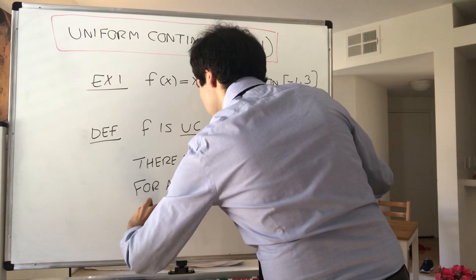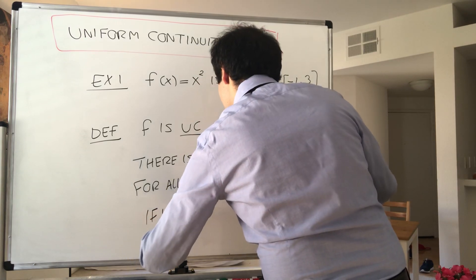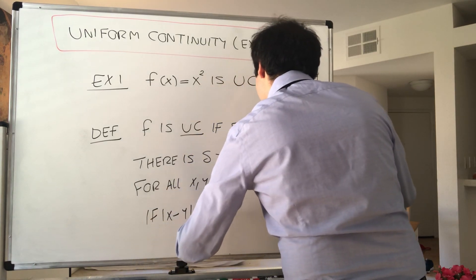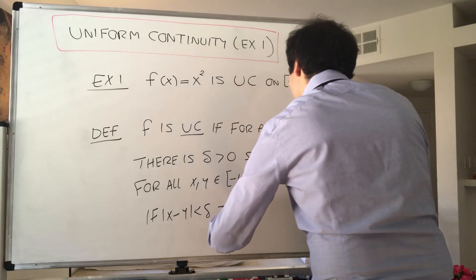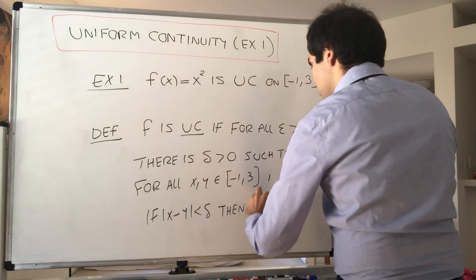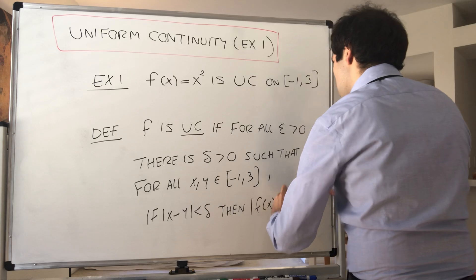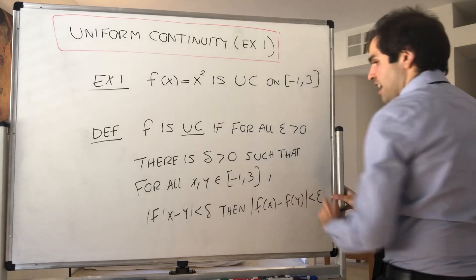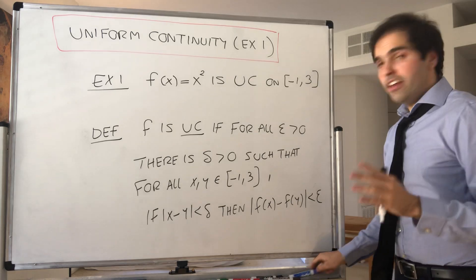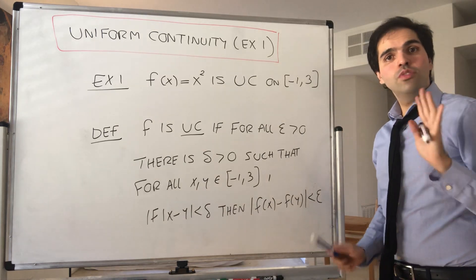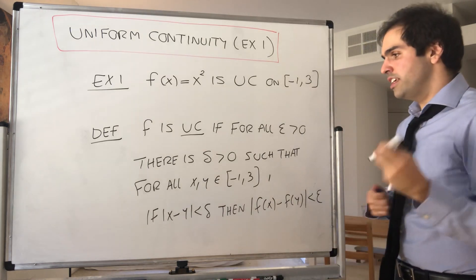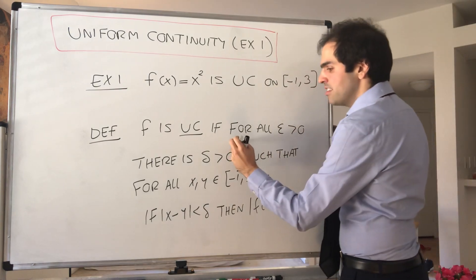So if |x - y| < δ, then |f(x) - f(y)| < ε. And here, it looks very similar to the definition of continuity, but the main difference is